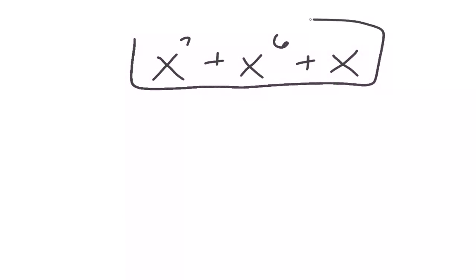Here's one of the problems that always cause a lot of issues. Say we have x to the 7th plus x to the 6th plus x. So first I need to put everything in my box.